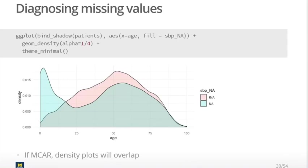If the missingness is completely at random, these density plots will completely or roughly overlap, because the missingness is not explained by anything in the dataset. If it's truly completely random, there should be no difference in age between those with missing data and those with data present.